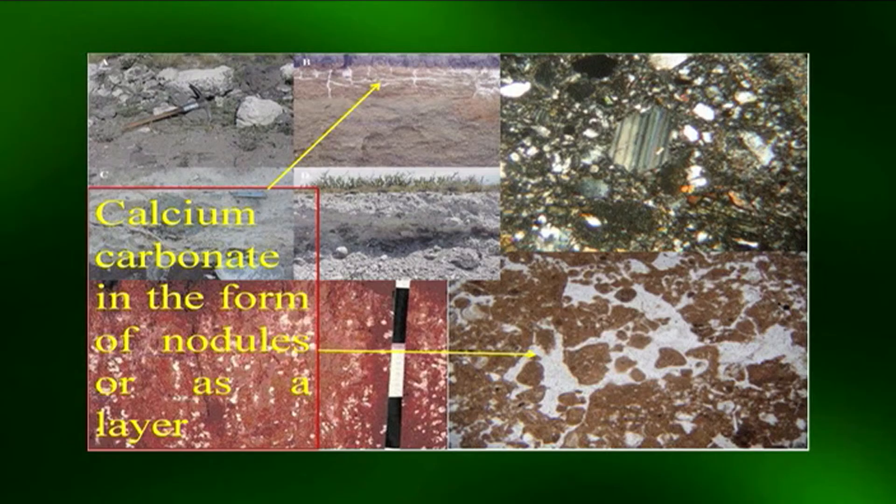In some soils the B horizon results purely from weathering of the underlying rock, whereas in other soils this weathering is supplemented by the translocation of materials from overlying horizons. Thus the B horizon needs to be inspected carefully in order to understand the genesis of the soil. In some soils the B horizon is enriched with calcium carbonate in the form of nodules or as a layer.